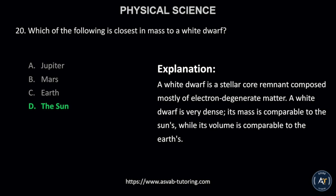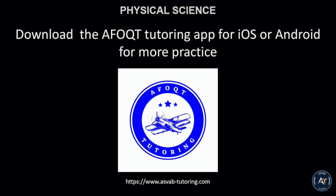This is because a white dwarf is a stellar core remnant composed mostly of electron-degenerate matter. A white dwarf is very dense; its mass is comparable to the Sun's, while its volume is comparable to the Earth's. Download the AFOQT tutoring app for iOS or Android for more practice.